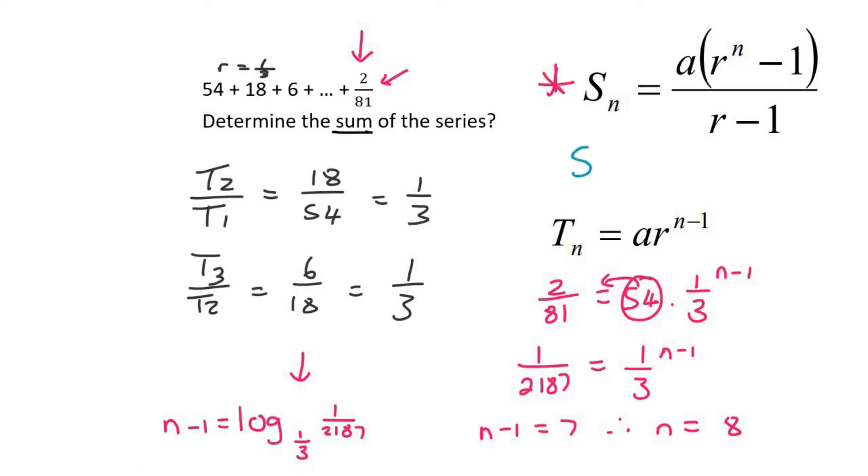I'm going to use a different color now. So the sum of the first 8... would be a. What did we say a was? Oh it's 54. The ratio is a third.